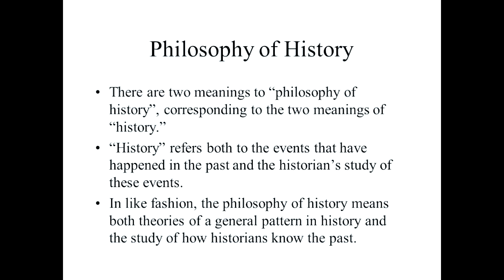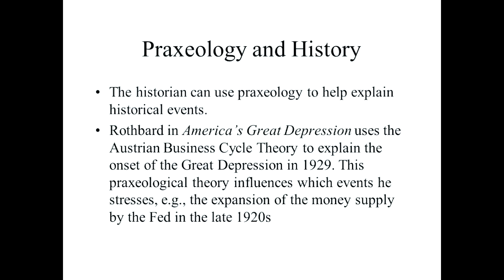In similar fashion, we can distinguish between two meanings of philosophy of history. One of these, corresponding to the first meaning of history, would refer to the view that there is an underlying pattern of all of history — some kind of general explanation accounting for the whole progress of history throughout time. The theory of Karl Marx would be the most famous of these, where Marx thought there are stages of history starting with primitive communism, going through slavery and feudalism, capitalism, and culminating in socialism.